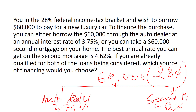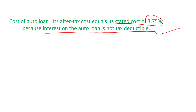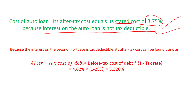Can you guess? Auto dealer, right? It's 3.75 percent, way lower than 4.62 percent for the home mortgage. But here's the trick: if you go to the auto dealer and finance your car through them, the after-tax cost equals the stated interest rate of 3.75 percent, because the interest on an auto loan is not tax-deductible.